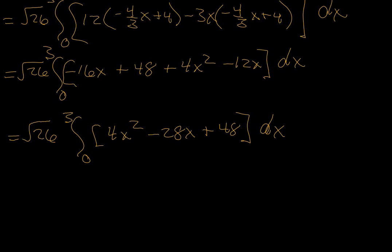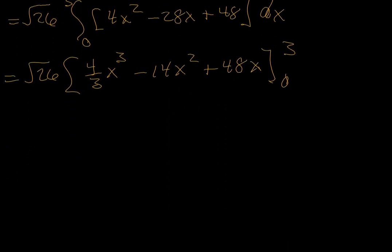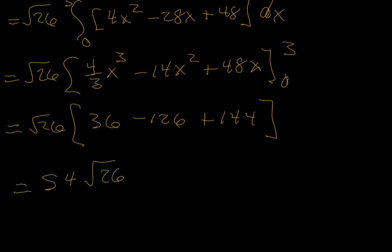Tedious, maybe not difficult, but definitely tedious. Square root of 26, integral of 4x squared is 4/3 x cubed minus 14x squared plus 48x, and x goes from 0 to 3. A little bit of arithmetic. When x is 0, those three terms are all 0. When x is 3, we get 36 minus 126 plus 144, which ultimately gives us 54 root 26.